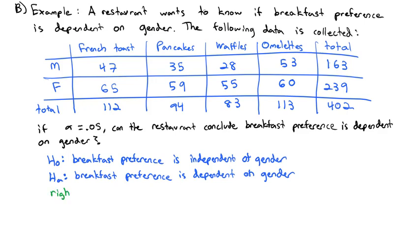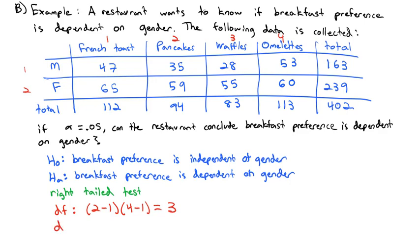As usual with the chi-squared, we have a right-tailed test. Our degrees of freedom — to help us calculate the distribution — is the number of rows (don't count the total): two rows minus one, times the number of columns (don't count the total): four columns minus one. That gives us one times three, or three degrees of freedom. Our distribution is a chi-squared with three degrees of freedom.